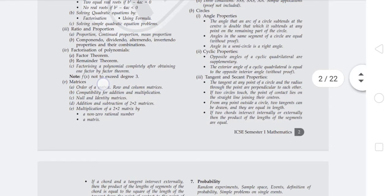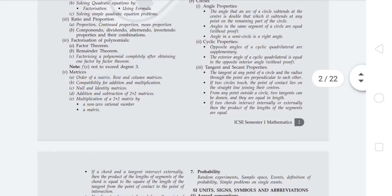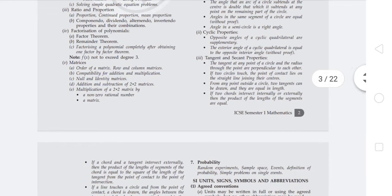Cyclic properties include: opposite angles of a cyclic quadrilateral are supplementary, and the exterior angle of a cyclic quadrilateral is equal to the opposite interior angle.